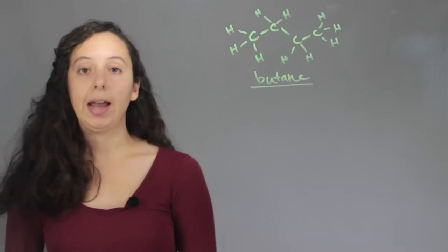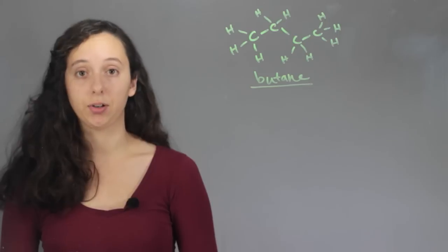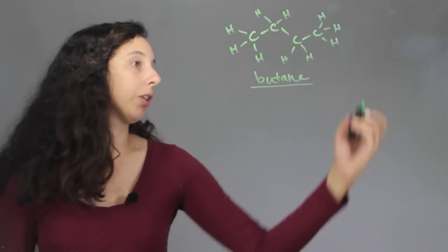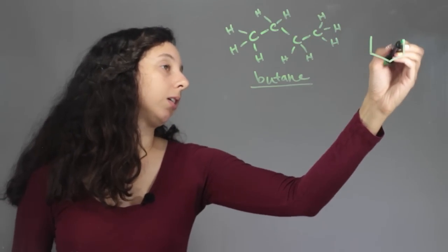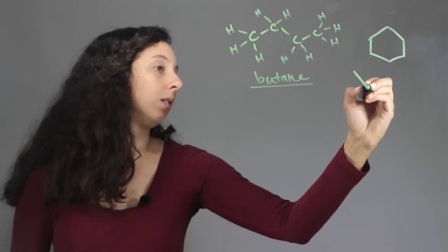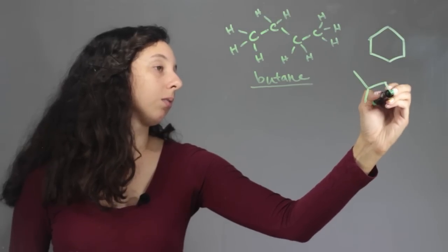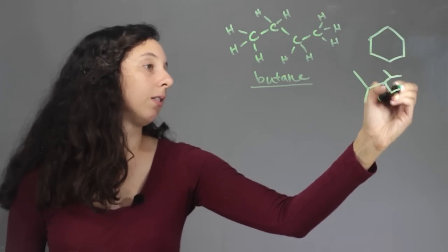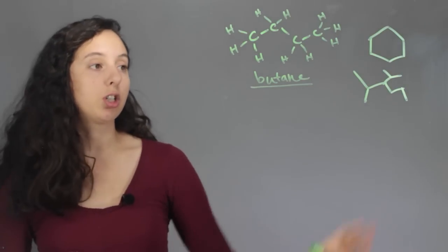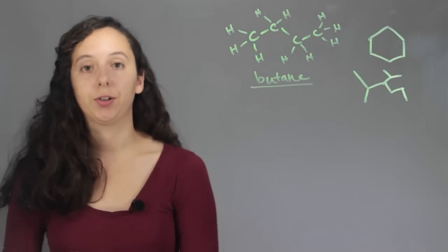So anything that has just carbons and hydrogens is a hydrocarbon. We can also draw these in our stick form. So here's cyclohexane. Here's some other branch guys. And really anything with a structure, again, is going to be a hydrocarbon.